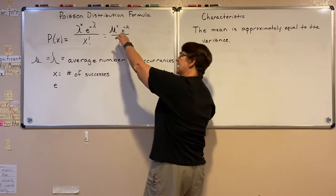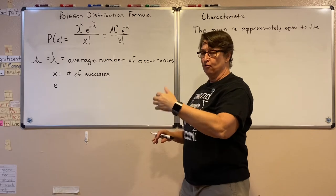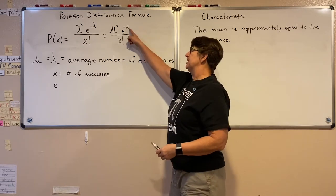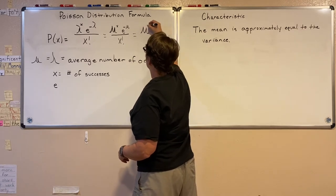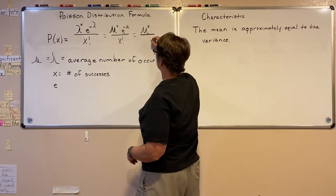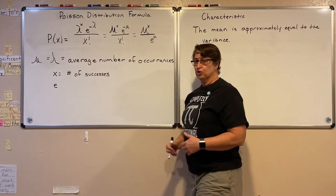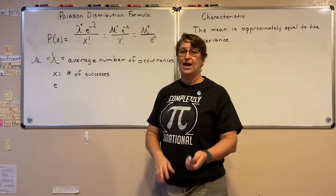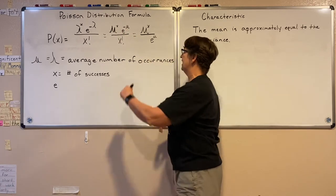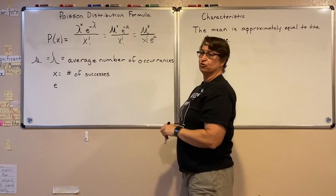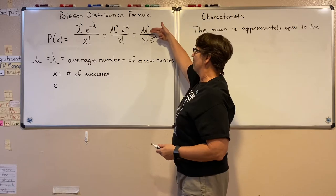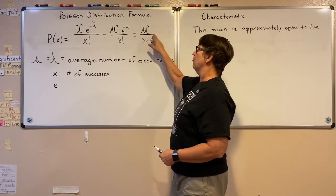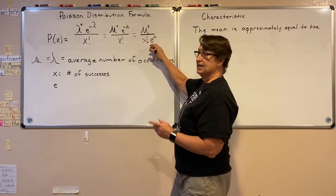This negative exponent means it's 1 over that number — from algebra, it just flips to the bottom. So the formula becomes: mu to the x over x factorial times e to the mu. In my opinion, it's easier to think about if we just get rid of that negative exponent altogether and write it in this form: our average number of occurrences raised to x, over x factorial times e raised to the mu.